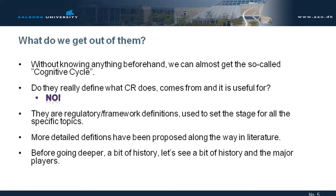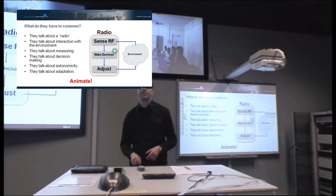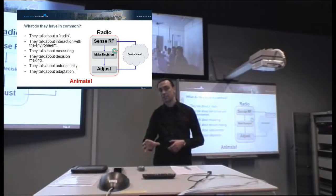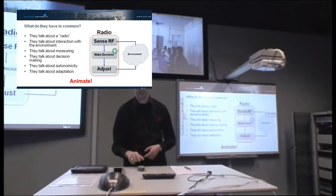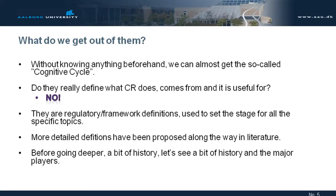Without knowing anything, just starting from those definitions, we almost get to what is called today the cognitive cycle. If you look at the slide, there is sense, make decision, adjust, environment, and sensing again — this is a cycle. This is exactly what the cognitive cycle is supposed to do: repeat itself infinitely, because that's the only way for adaptation.